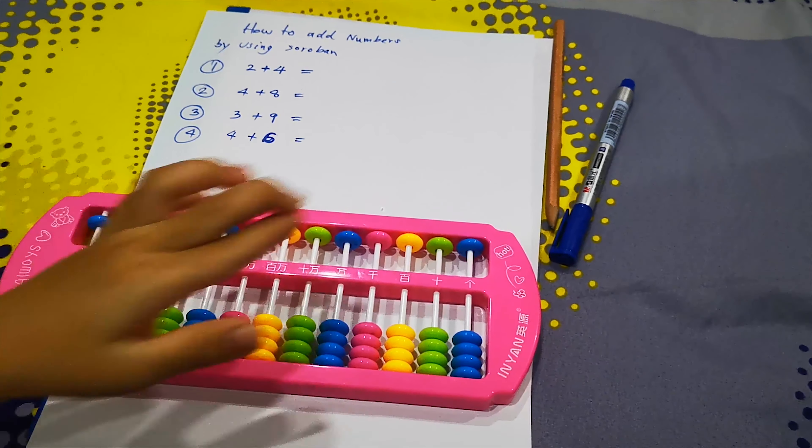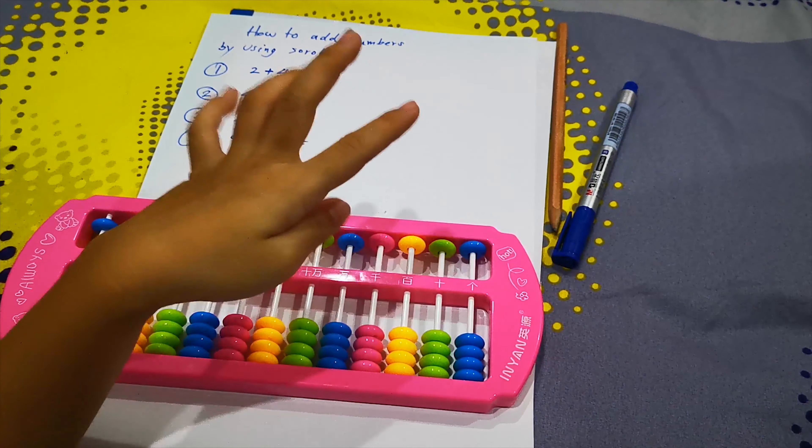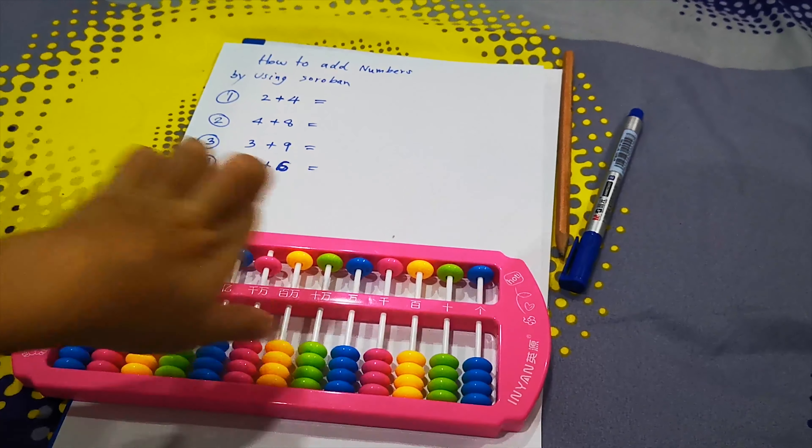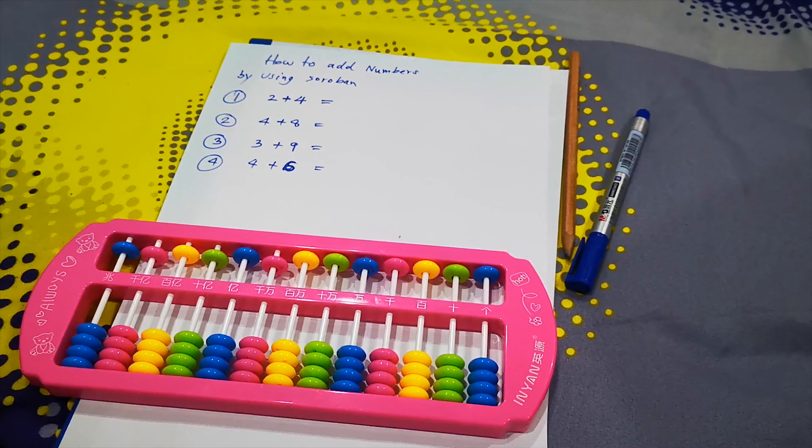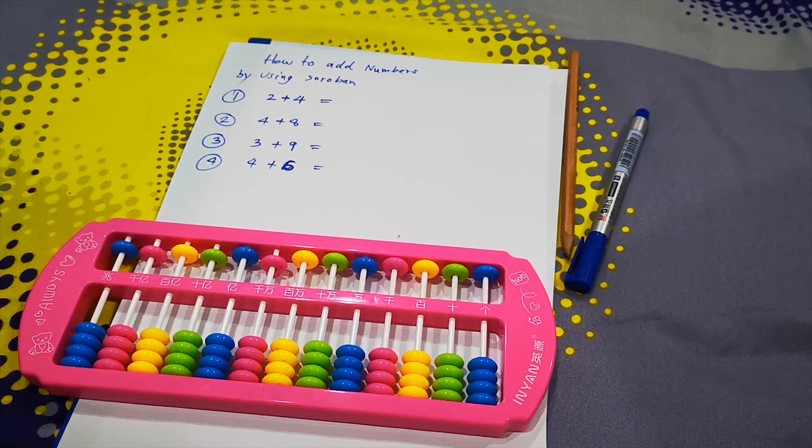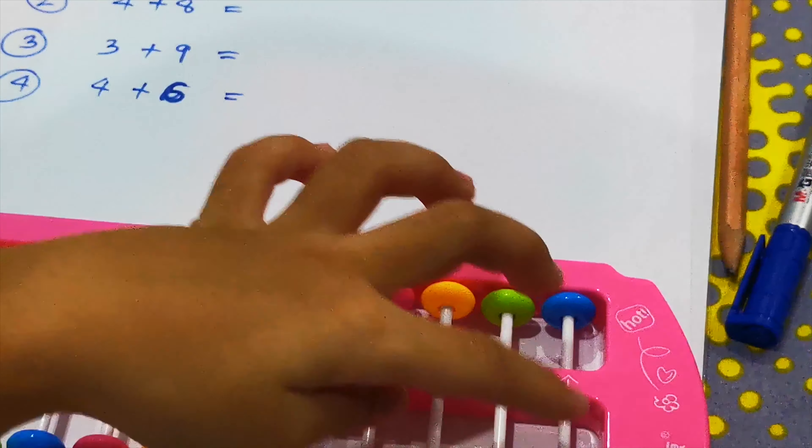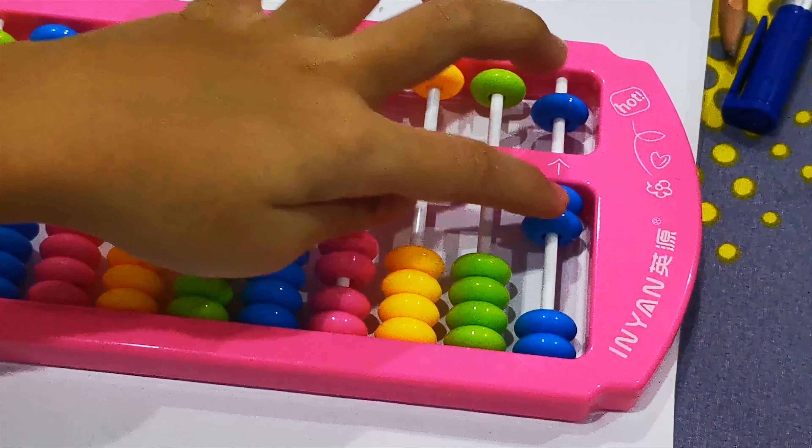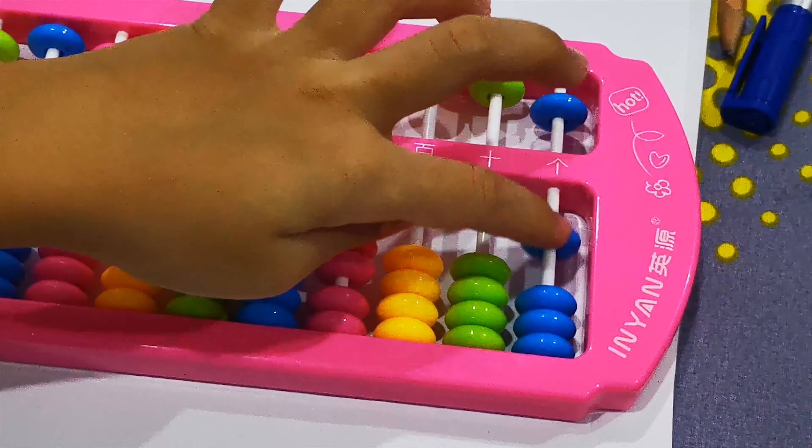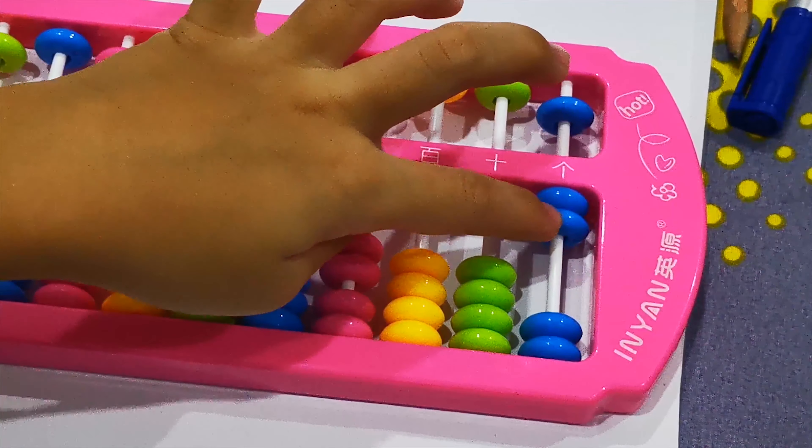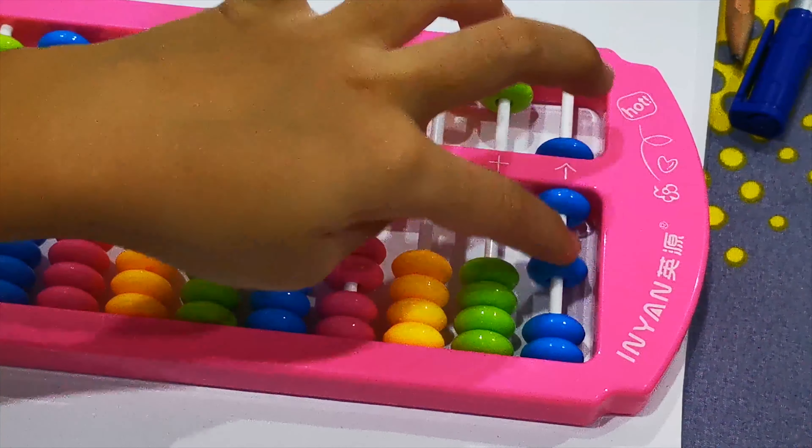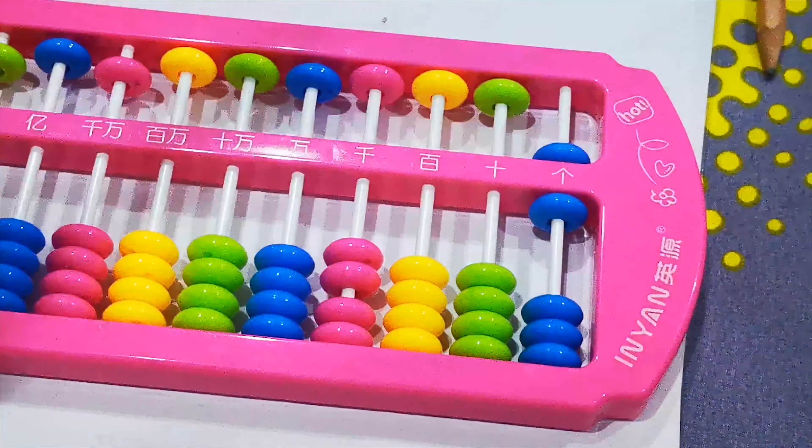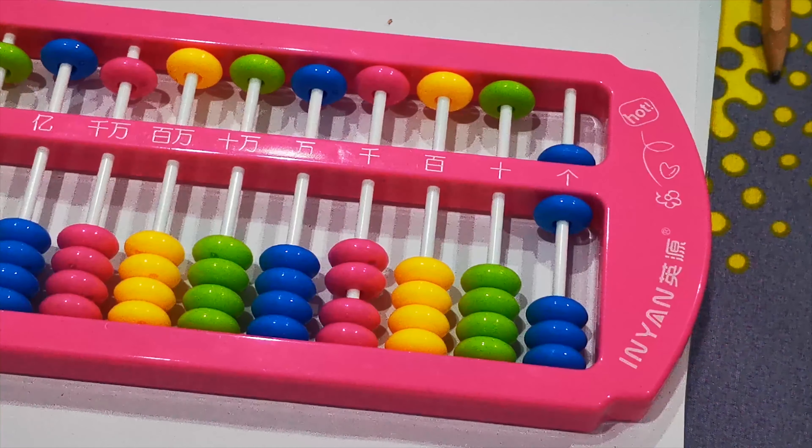Now let's start to answer question number 1. 2 plus 4. How to do this? Add 2. Slowly, show me. Add 4. Add 2. Sorry, add 2, add 5, add 1 equals 6. Put the answer down. Yes, I did it. 6.